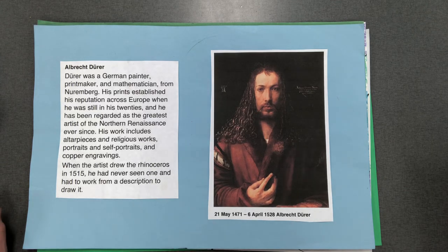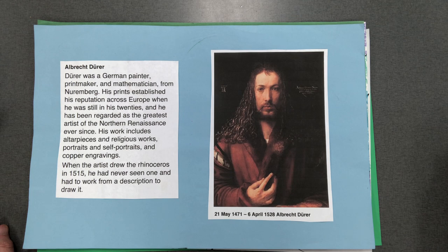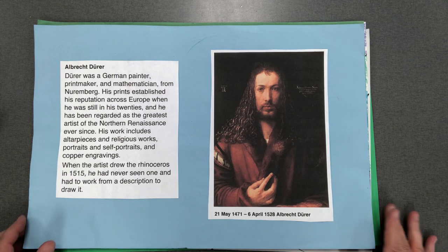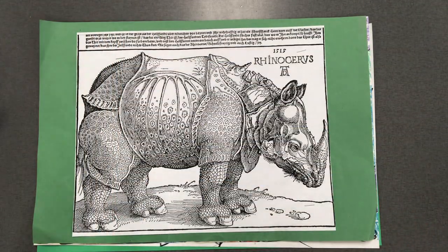Hi everyone! Today we're going to learn about Albrecht Dürer. Dürer was a German painter, printmaker, and mathematician from Nuremberg. When he drew a rhinoceros in 1515, he had never actually seen one and worked from a description. It's super remarkable because it's very detailed and has lots and lots of pattern in it.